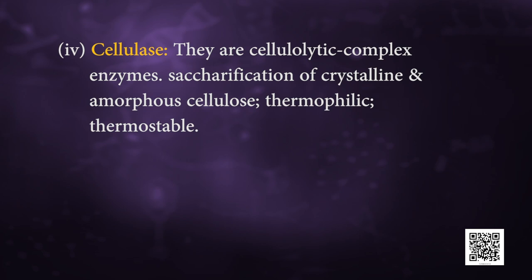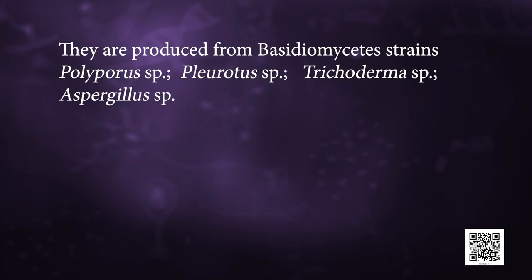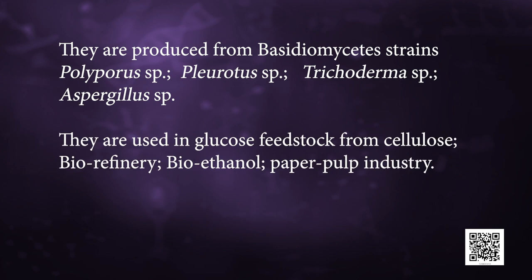Next enzyme is cellulase. They are cellulolytic complex enzymes involved in the saccharification of crystalline and amorphous cellulose. They are thermophilic and thermostable. They are produced from basidiomycetes strains, Polyporus species, Pleurotus species, Trichoderma species, and Aspergillus species. They are used in glucose feedstock from cellulose, biorefinery, bioethanol, and paper pulp industry.